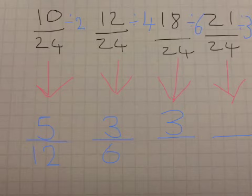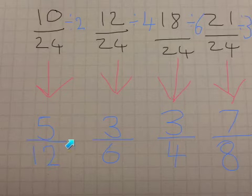24 divided by 6 is 4. 21 divided by 3 is 7. 24 divided by 3 is 8. Now, I have ordered them from smallest to largest.